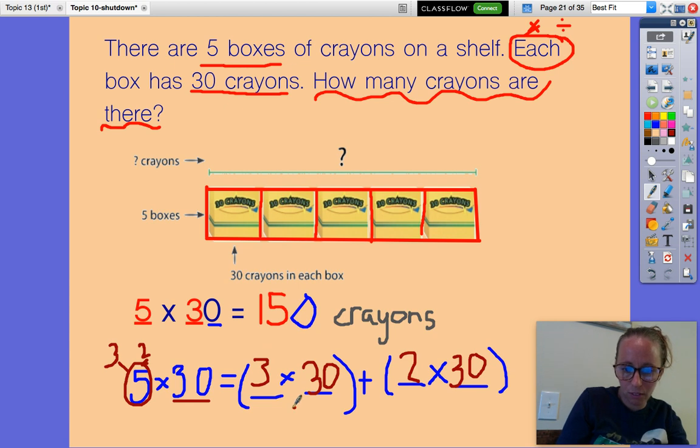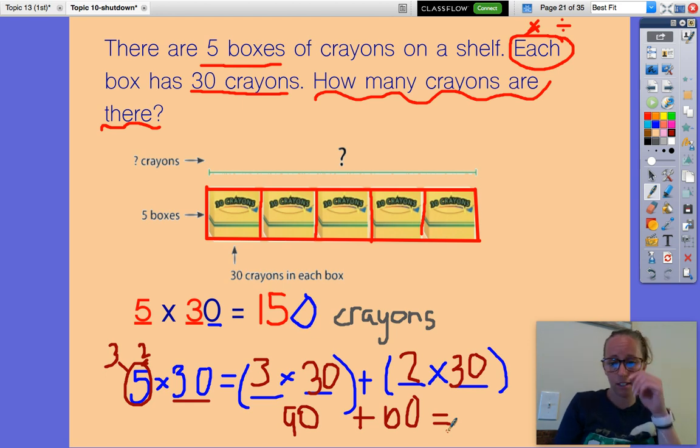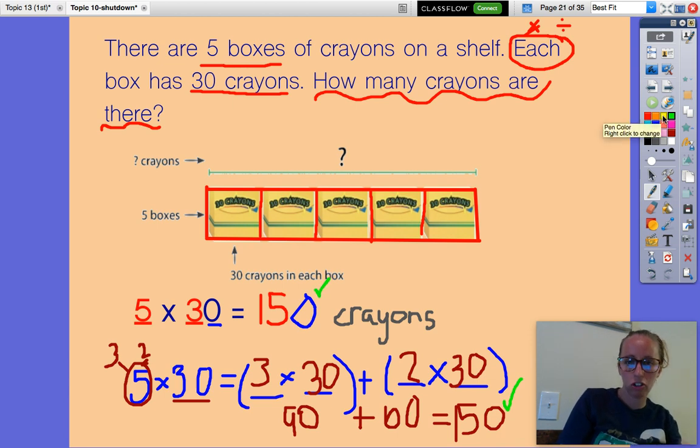Three times 30. Three groups of three is nine and a zero, plus two times 30. Two groups of three is six and add a zero. What is 90 plus 60? I'm going to skip count on my fingers: 90, 100, 110, 120, 130, 140, 150. The answer is 150. I also know that nine plus six is 15 and zero plus zero is zero. Did I get the same answer both times? Sure did. I used two different strategies and I got the same answer.